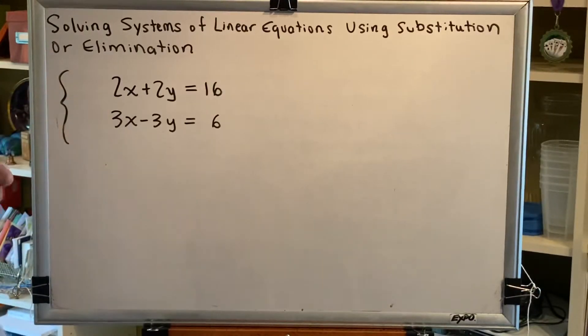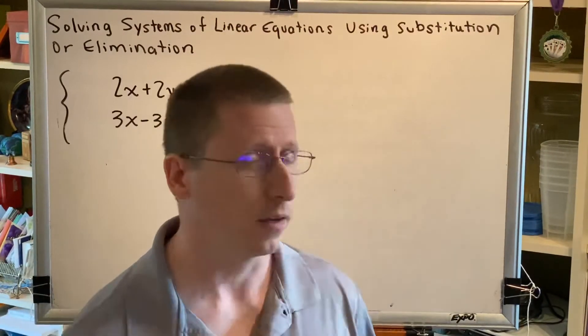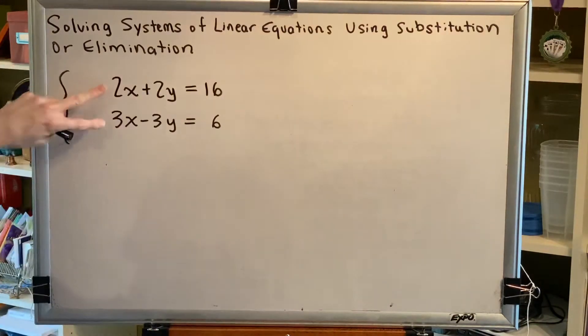Right now, our x terms are 2x and 3x. Clearly, those are not opposites. The opposite of positive 2x would be negative 2x. So how are we going to make these into opposites?